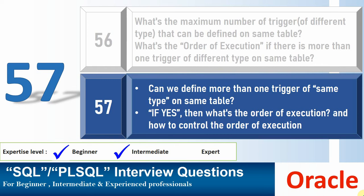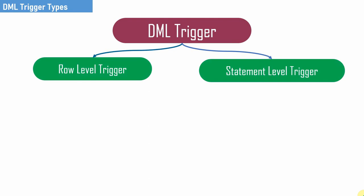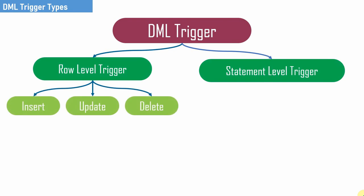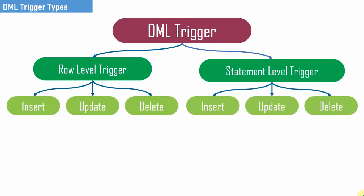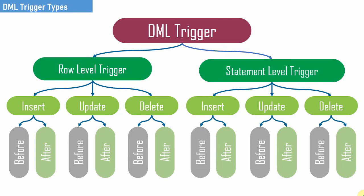If yes, then what is the order of execution? To give a quick recap of what we saw in the last video: DML triggers are classified into two types — row level trigger and statement level trigger. Further, these triggers are classified based on the DML operation: insert, update, delete. So we have six types of triggers, further classified based on the timing of the event.